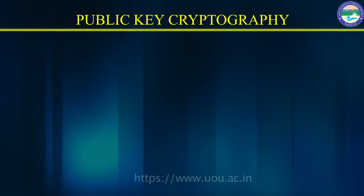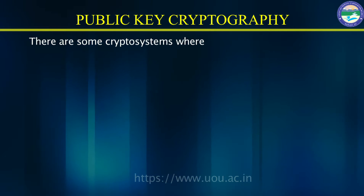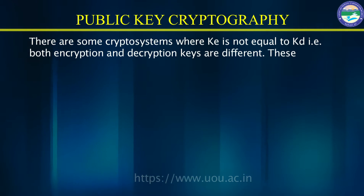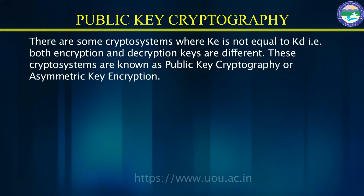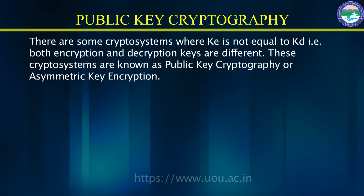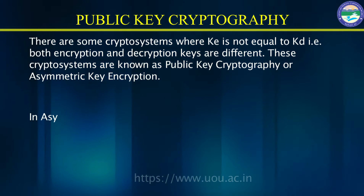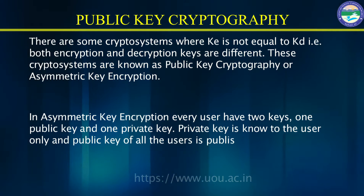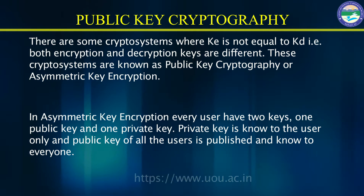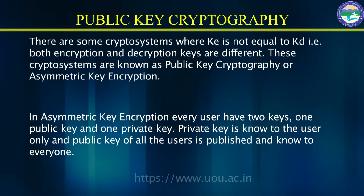The second type is public key function. There are some cryptosystems where KE is not equal to KD — both encryption and decryption keys are different. These cryptosystems are known as public key cryptography or asymmetric key encryption. In asymmetric key encryption, every user has two keys: one public key and one private key. The private key is known to the user only, and the public key of all users is published and known to everyone.